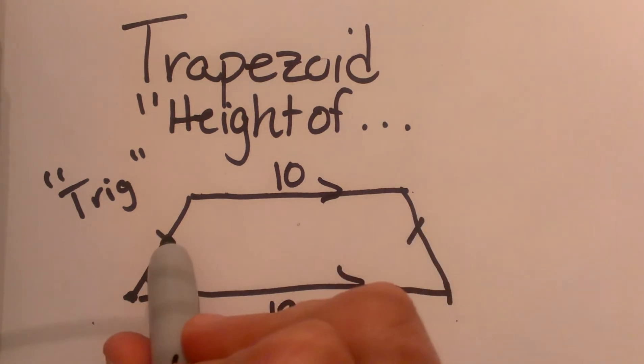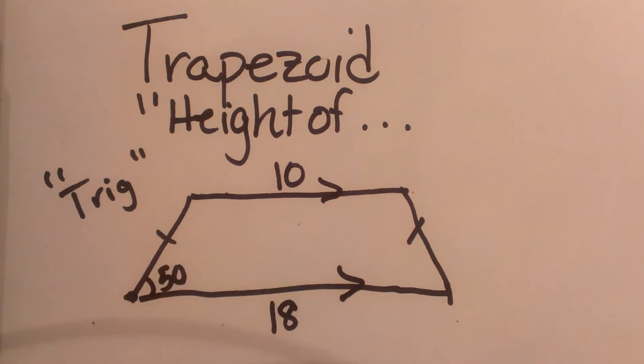And then this is isosceles so these two legs are congruent. We have a 50 degree angle marked at the bottom left corner. What we know is since this angle is 50, we also know this angle is 50 because it is isosceles.